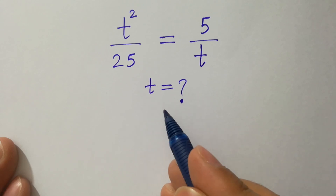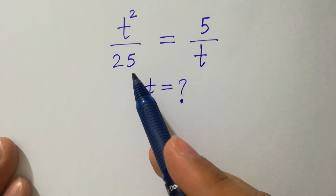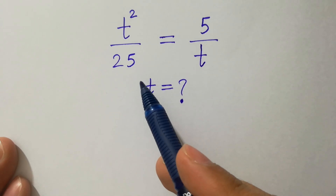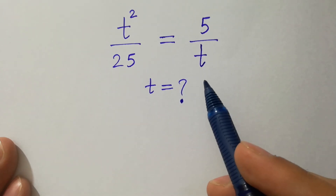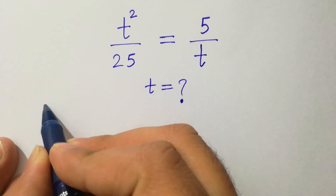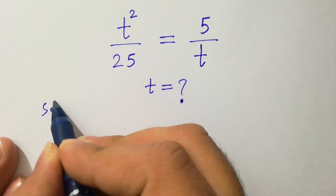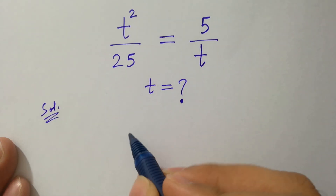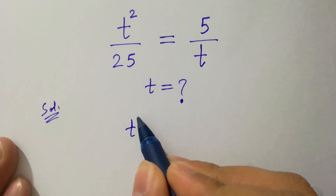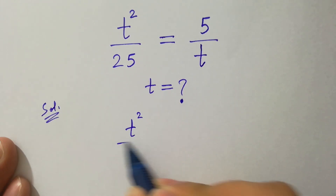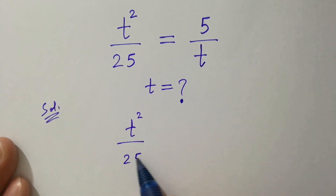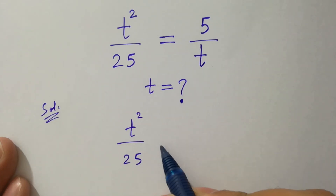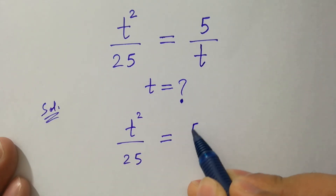Friends, find the value of t if t squared over 25 equals 5 over t. Let's have a solution. So we have a problem of t squared over 25 which is equal to 5 over t.